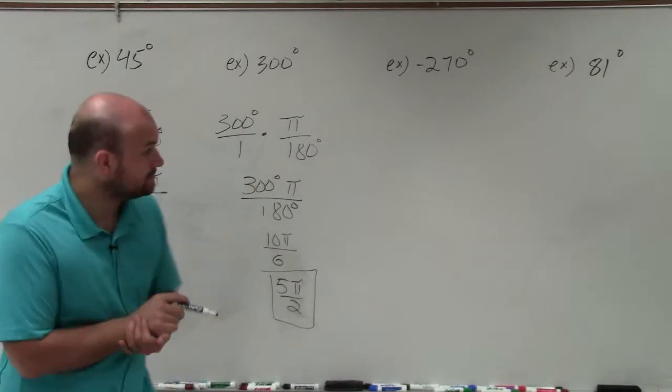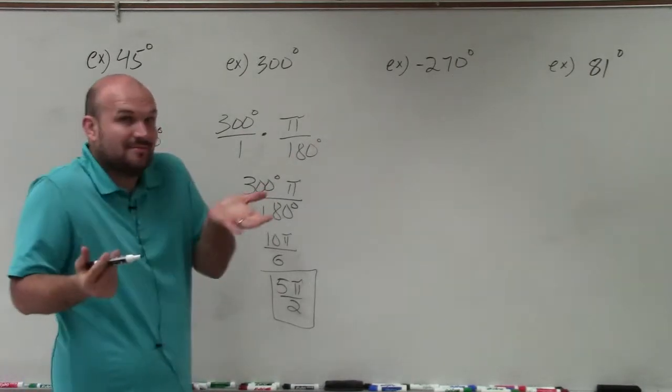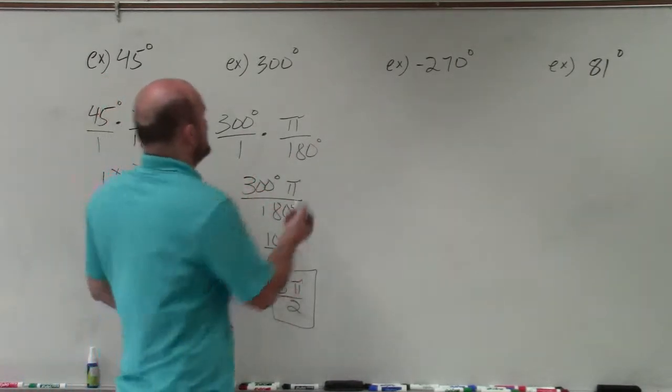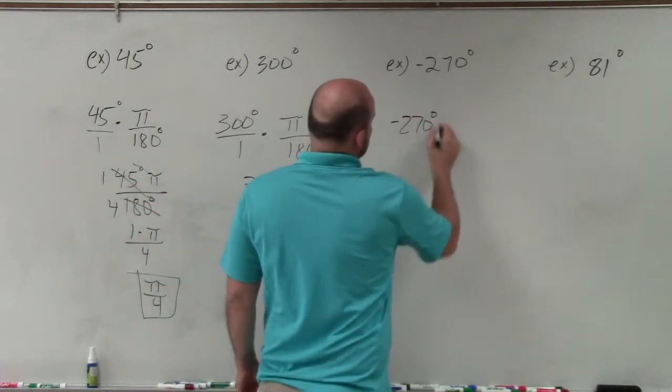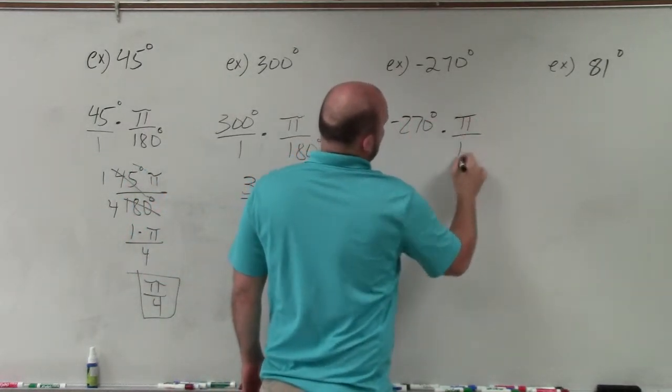Now, we have a negative number. Again, we're just going to be doing the same thing. It's not really going to change anything. I'm just going to take this number, 270 degrees, times pi over 180.